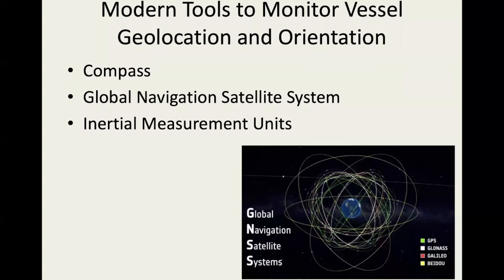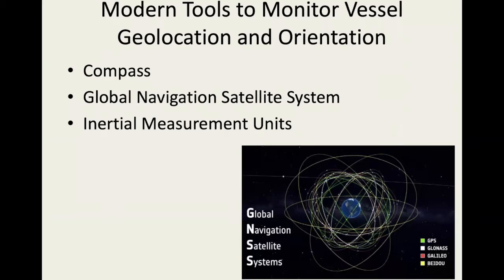The transducer is not always pointing parallel to local gravity because the ship can pitch and roll. We also need to know the ship's latitude and longitude to geolocate the measurement. Modern tools used to monitor vessel geolocation and orientation include compasses, the Global Navigation Satellite System (which includes GPS from the US, GLONASS from Russia, the European Galileo system, and China's Beidou system), and inertial measurement units with three-axis accelerometers, gyroscopes, and magnetometers.